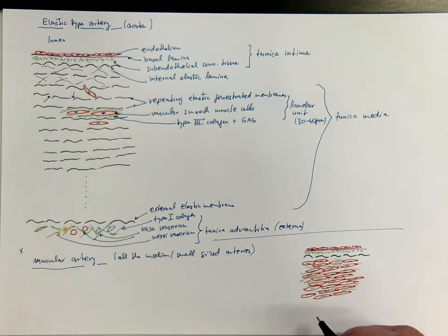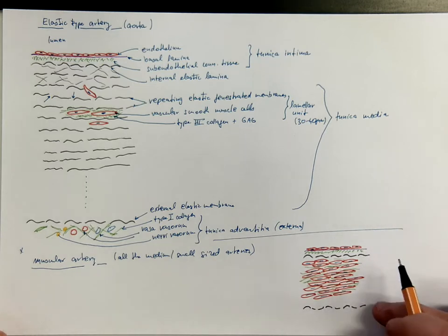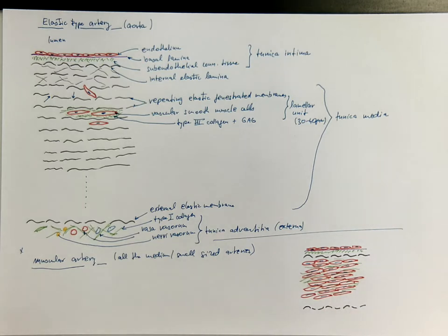There might be the external elastic lamina on the border between media and adventitia. And in the adventitia, we got again, the vasa vasorum, and the nervi vasorum, embedded in collagen fibers.